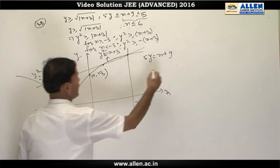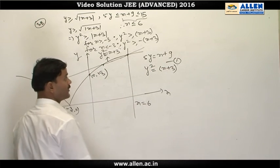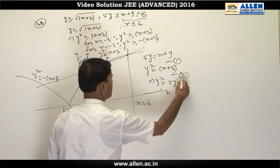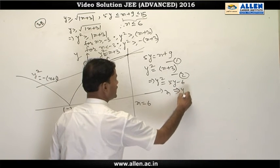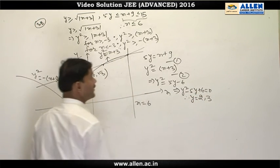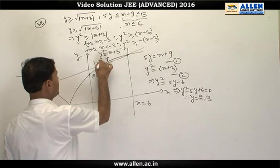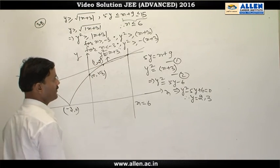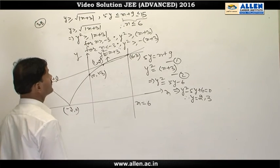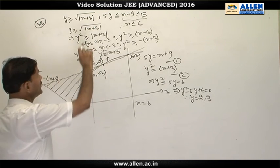To find intersection points, we solve the line with the curve y² = x + 3. Substituting x from the line equation gives y² = 5y − 6, so y² − 5y + 6 = 0, yielding y = 2 and y = 3. Substituting back: y = 2 gives x = 1, so the point is (1, 2); y = 3 gives x = 6, so the point is (6, 3).